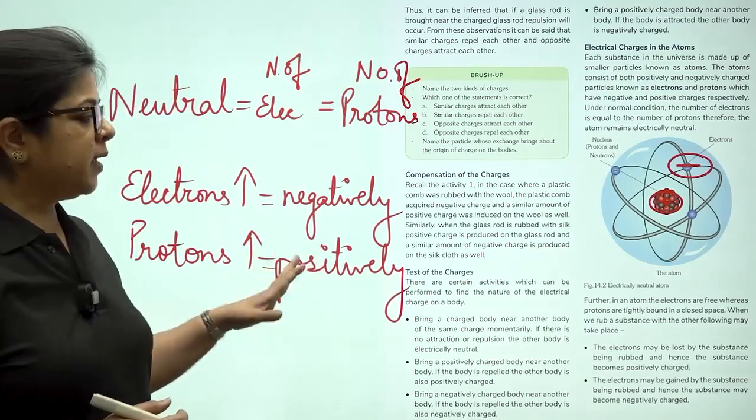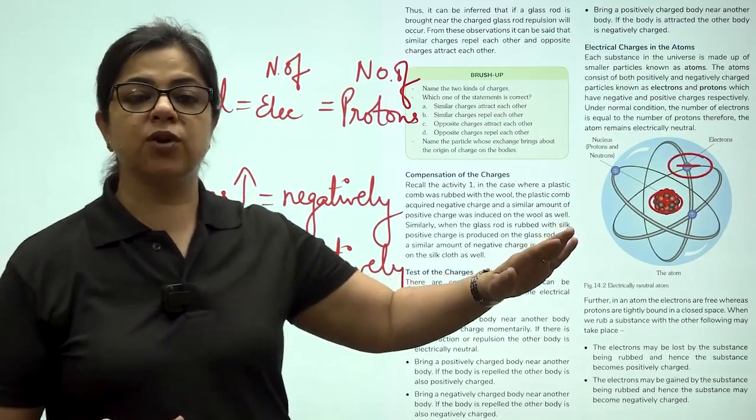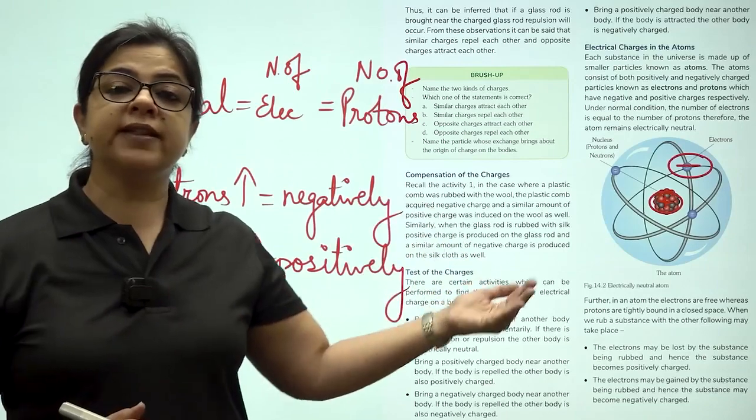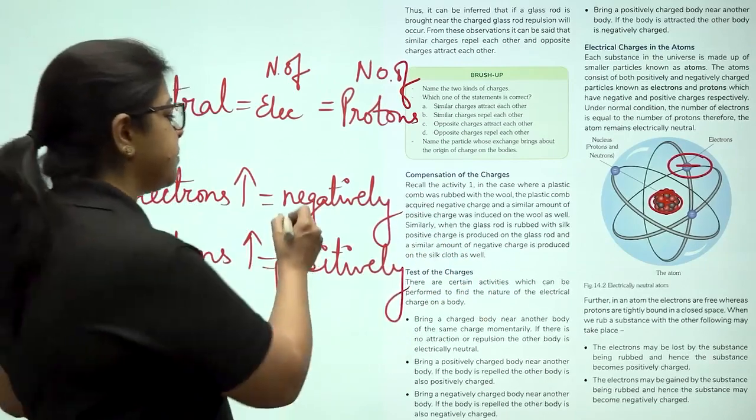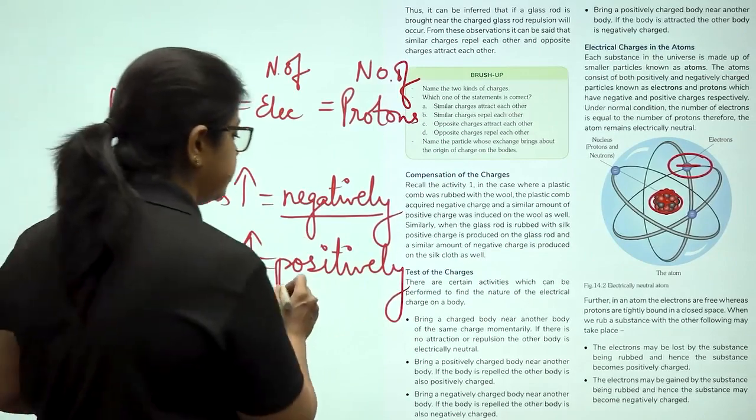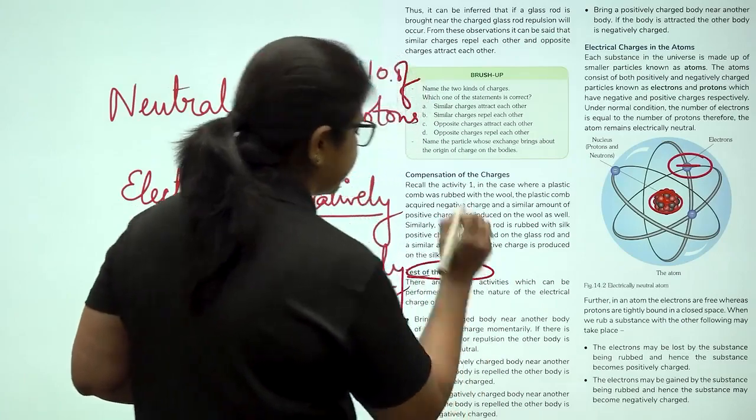So in case I am rubbing two objects, one of them is going to lose electrons and the other one is going to gain those electrons. The body that will gain the electrons will become negatively charged and the body that will lose electrons is going to become positively charged.